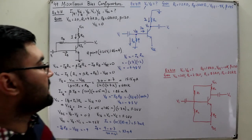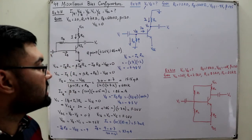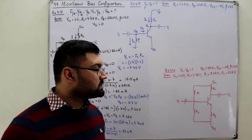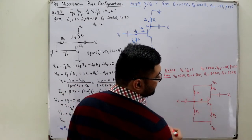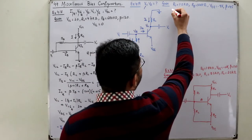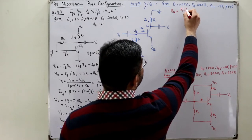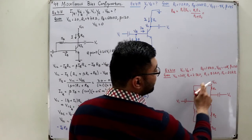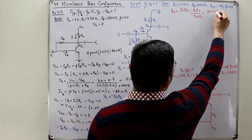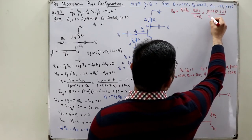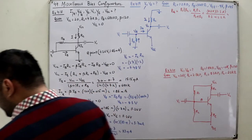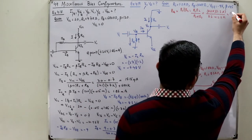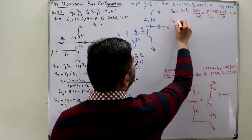Example number three is the voltage divider configuration. Whenever you have a voltage divider configuration, you go for the Thevenin equivalent resistance and voltage at the base terminal. R_Thevenin is R1 in parallel with R2: (R1 × R2) / (R1 + R2) = (8.2k × 2.2k) / (8.2k + 2.2k) = 1.73 kilohms.